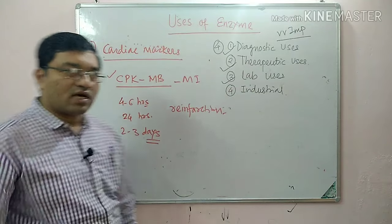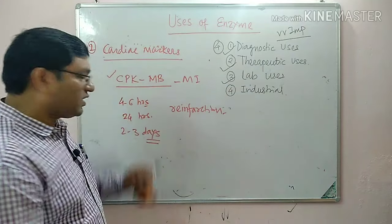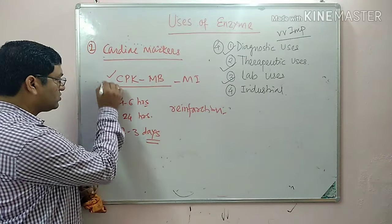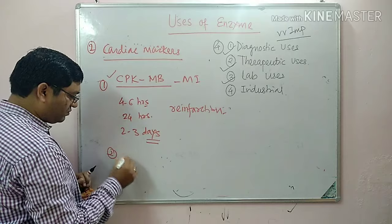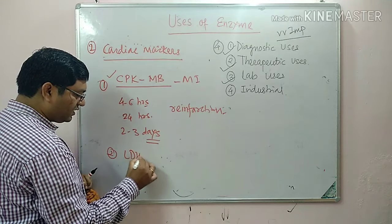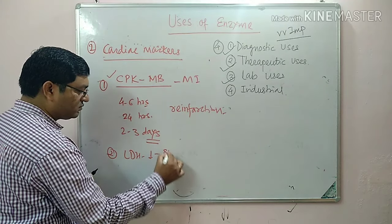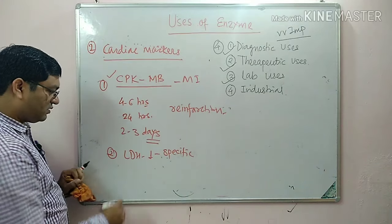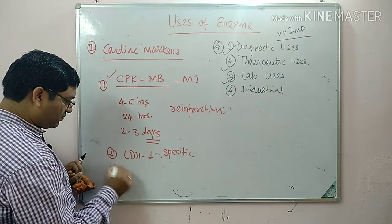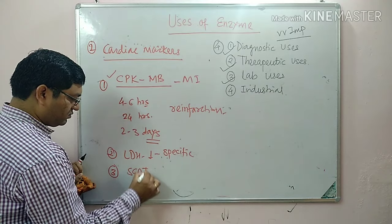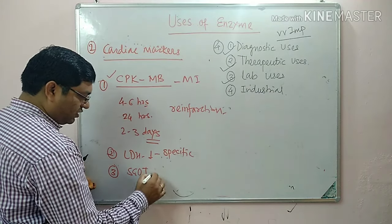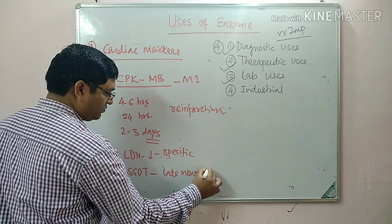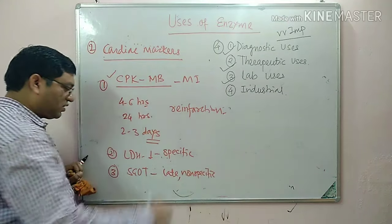CPK-MB is also a marker of re-infarction and is specific for heart. Other enzymatic markers include LDH1, which is also specific for the heart. SGOT is also used but it is late and non-specific as a cardiac marker.